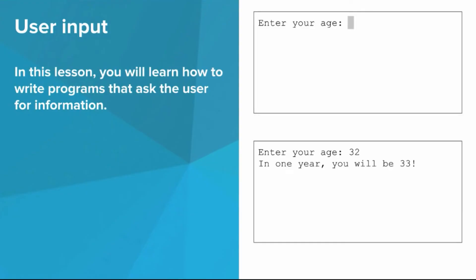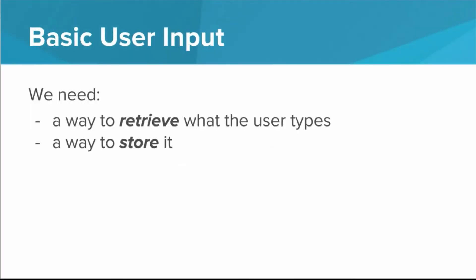In this lesson, you'll learn how to write programs that ask the user for information. In order to do this, in order to incorporate what the user types into our program, we need a way to retrieve what they type and a way to store it. We can use a variable to do the second thing, but how do we do the first thing?